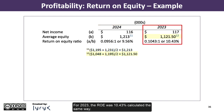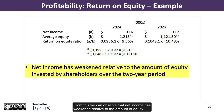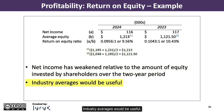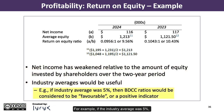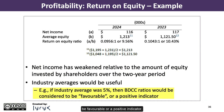For 2023, the ROE was 10.43%, calculated the same way. From this, we can observe that net income has weakened relative to the amount of equity invested by shareholders over the two-year period. Industry averages would be useful. For example, if the industry average was 5%, then the company's ratios would be considered to be favorable or a positive indicator.